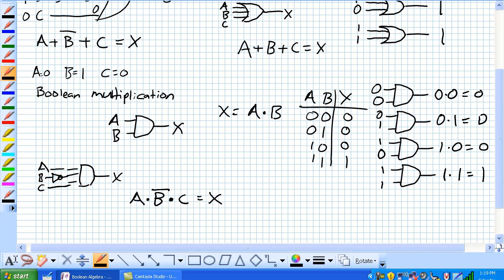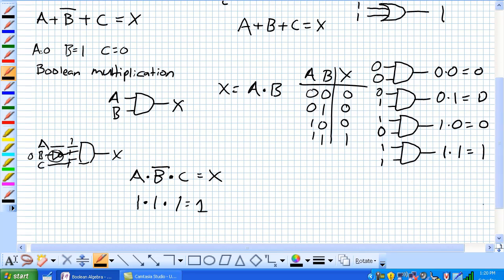We know that all inputs to an AND gate have to be 1 for an output to be 1. So we need a 1 here, a 1 here and a 1 here. But we've got this inverter right here, so that means B needs to be coming in as 0. Basically, it would be 1 times, B would be 0, but not B would be 1 and C and 1 equals 1.